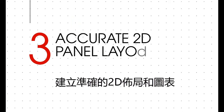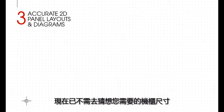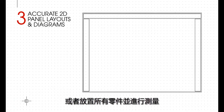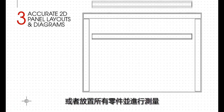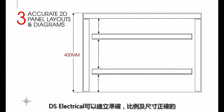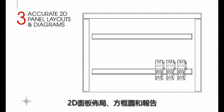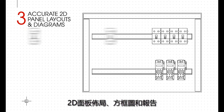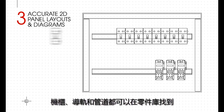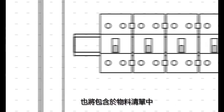3. Creating accurate 2D panel layouts and diagrams. Gone are the days of guessing what size cabinet you need or laying out all the parts and measuring around them. DesignSpark Electrical provides the capability to produce accurate, scaled and dimensioned 2D panel layouts alongside schematics and reports. Cabinets, rails and ducting are all available in the parts library and will be included in the Bill of Materials.